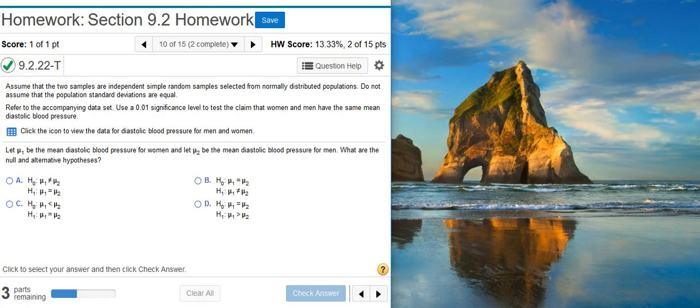Here's our problem statement. Assume that the two samples are independent simple random samples selected from normally distributed populations. Do not assume that the population standard deviations are equal. Refer to the accompanying dataset. Use a 1% significance level to test the claim that women and men have the same mean diastolic blood pressure.